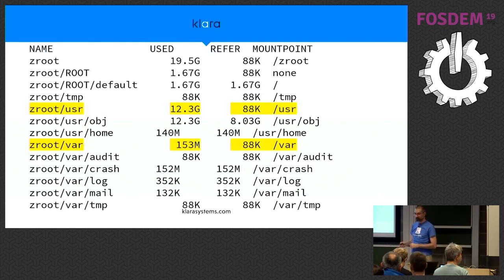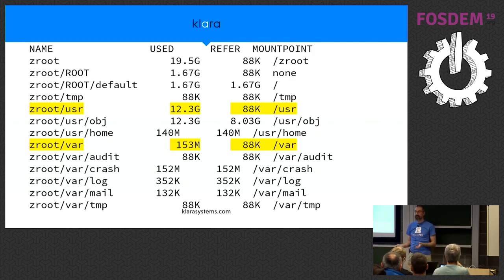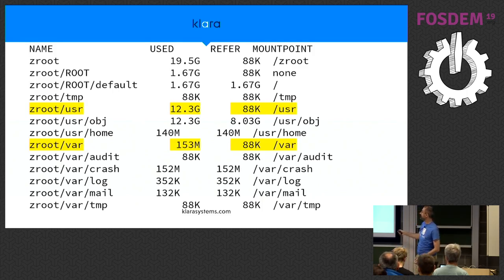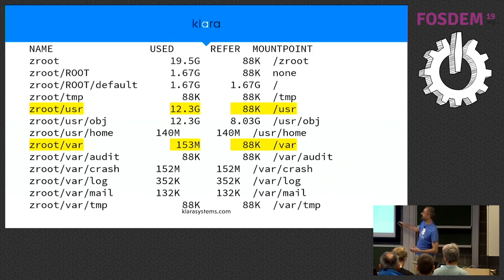This is the layout of the default file system setup if you use the ZFS installer on FreeBSD. We have the root of the pool which we mount to slash zroot. We have a 'root' container for all your boot environments that we don't mount at all. 'Default' is the boot environment created by the installer — your slash file system with 1.6 gigs of OS content. Slash USR actually contains 12.3 gigs of stuff but appears empty because we're not mounting it, so all the files in usr/bin, usr/lib, etc. fall through into slash.